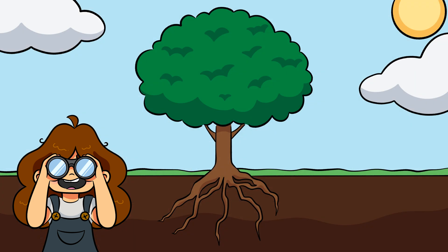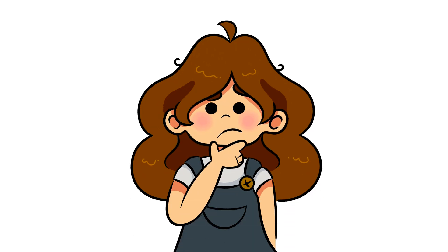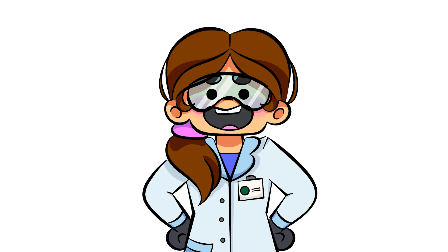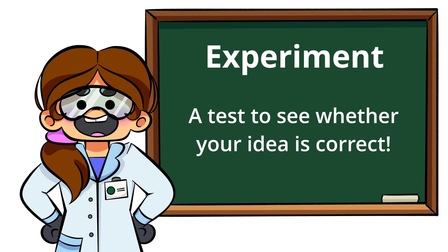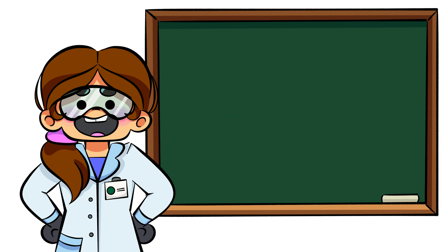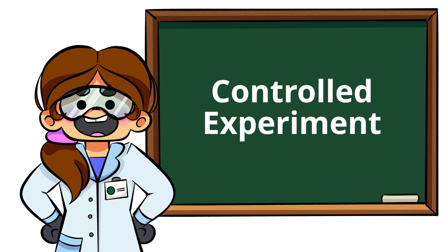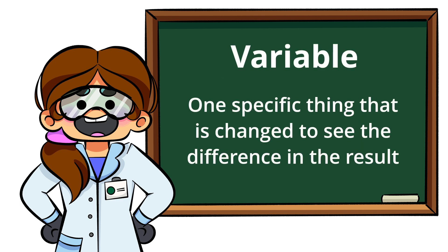Maybe you've also noticed that a great majority of plants are planted in soil. So what does this all mean? How can we be sure that plants need water, sun, and soil to survive and grow? Through an experiment, of course. An experiment is a test that engineers and scientists do to see whether their idea is correct. While experiments have many different types, the one we'll focus on today is a controlled experiment. In a controlled experiment, we make sure everything stays the same except for one specific difference, which is called a variable.